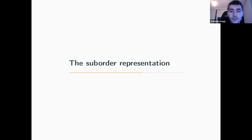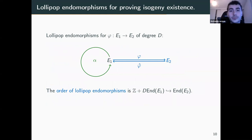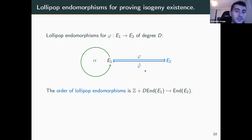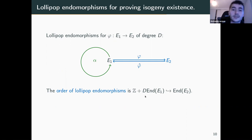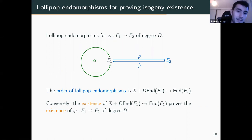To understand where suborder representations come from, I need to talk about lollipop endomorphisms. If there is an isogeny φ between E1 and E2, I can build endomorphisms of E2 by composing φ and its dual with endomorphisms of E1 — this gives a lollipop shape, hence the name. Considering all such lollipop endomorphisms gives a full order inside the endomorphism ring of E2, isomorphic to Z plus d times the endomorphism ring of E1. Conversely, the existence of this embedding proves that there must be an isogeny φ between E1 and E2 of degree d — so the two are equivalent.